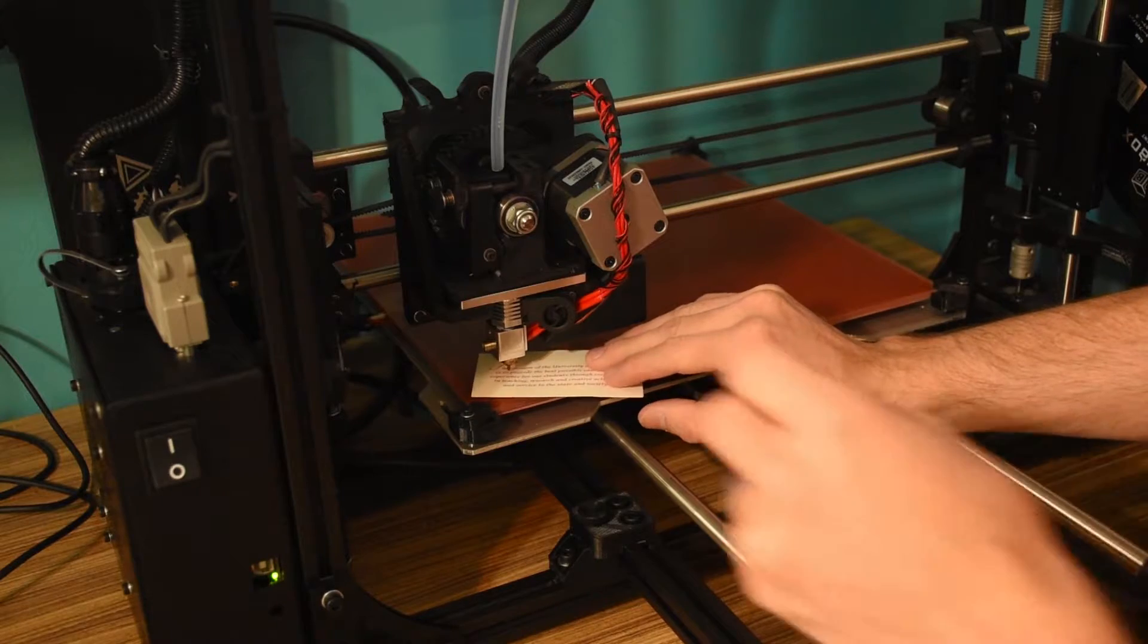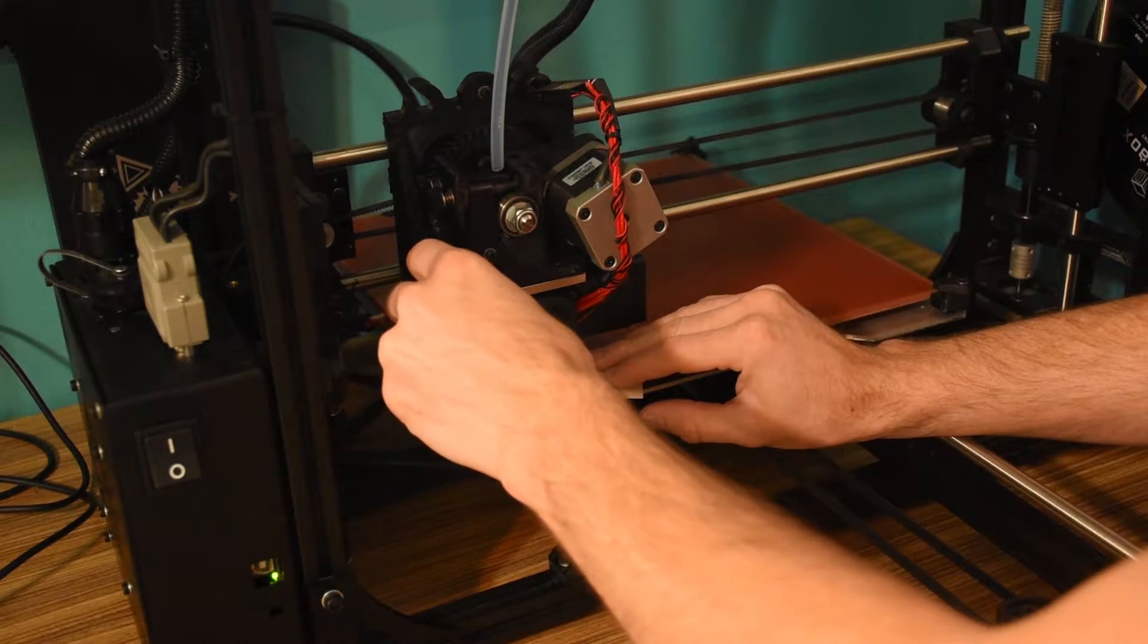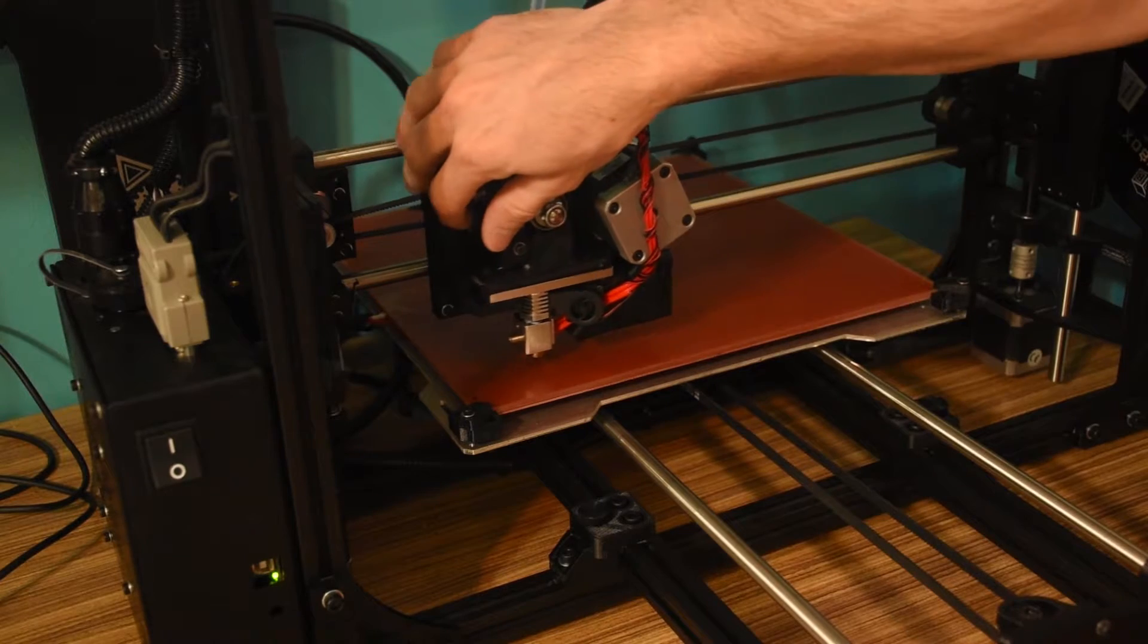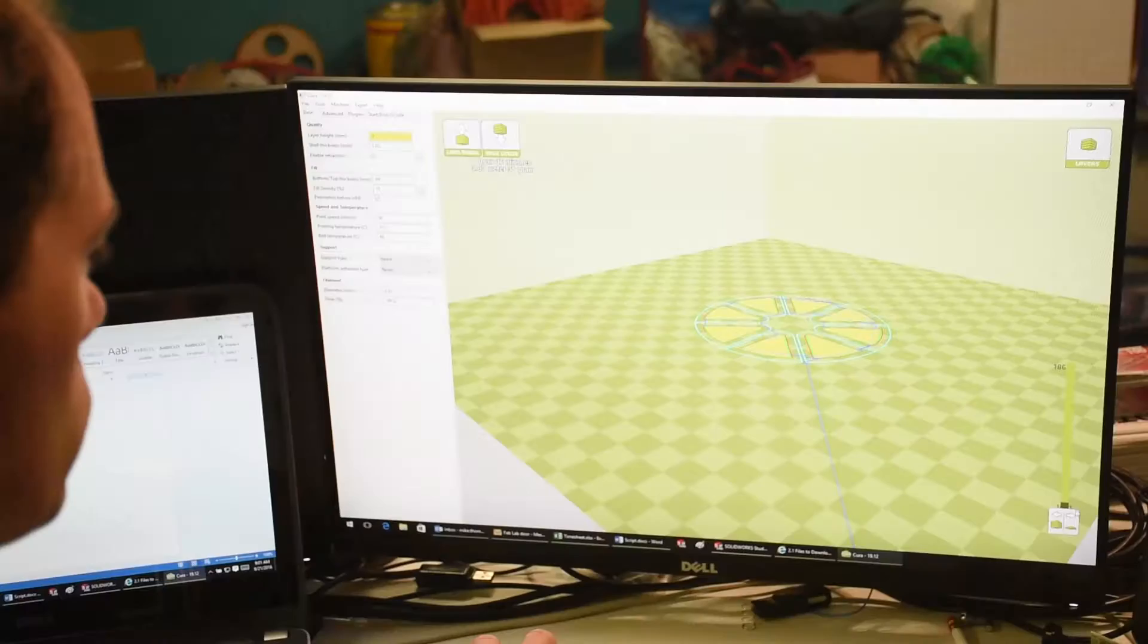And then we use a business card or a folded piece of paper as a spacer between the bed and the bottom of the nozzle, as we make the fine adjustments here in each corner to get it level.